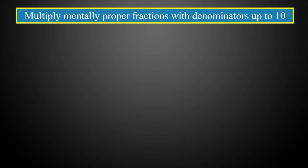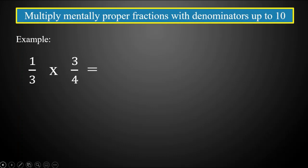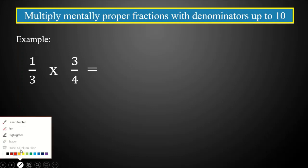Now let's try to multiply mentally proper fractions with denominators up to ten. For example: one-third times three-fourths. To multiply mentally, we first look for any common number we can divide from our numerators and denominators.